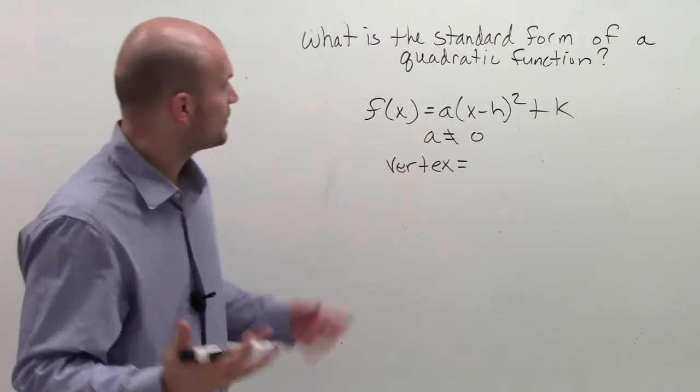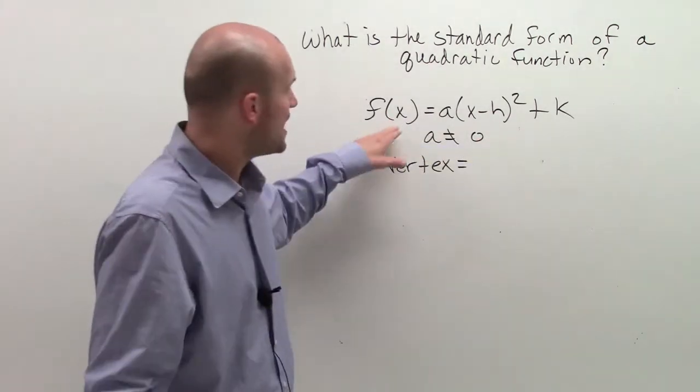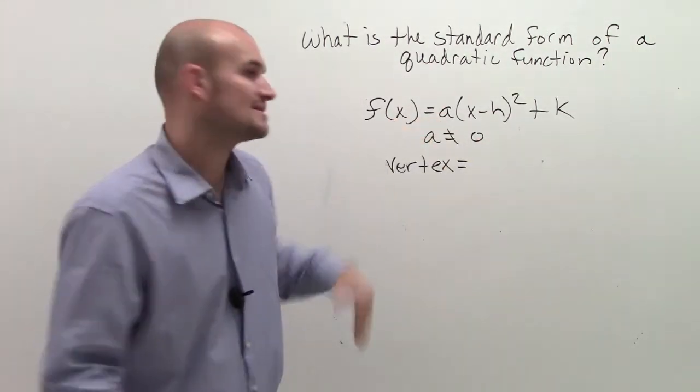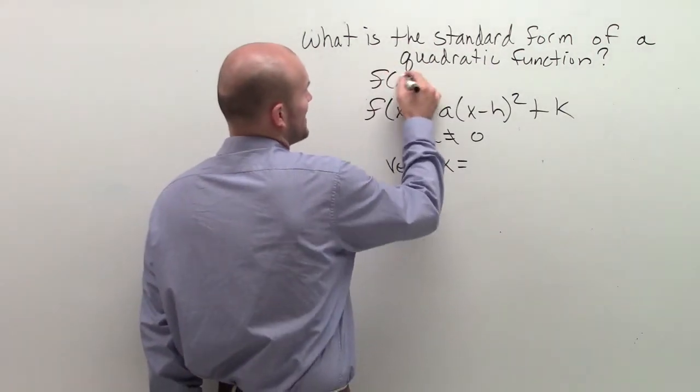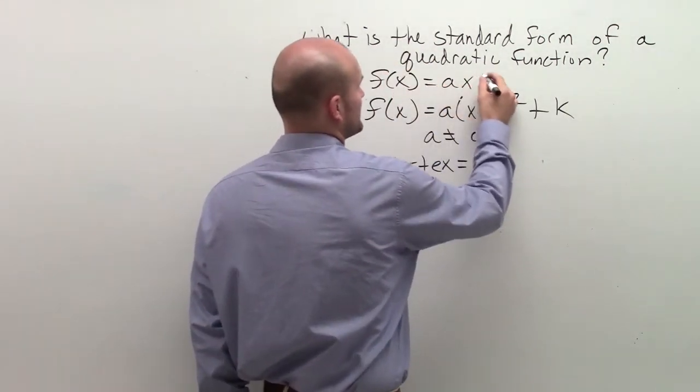So the standard form of a quadratic function is simply this: f(x) = a(x - h)² + k. And if you look at the definition of a quadratic, it looks something like this.